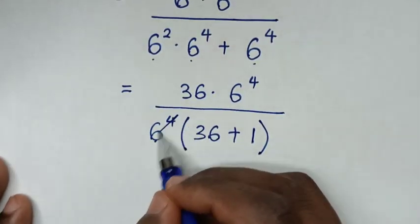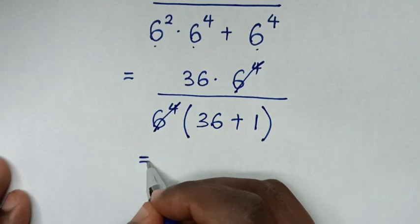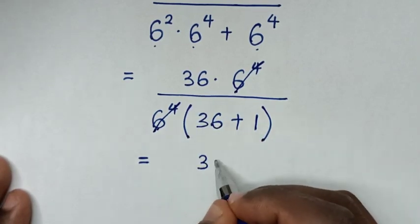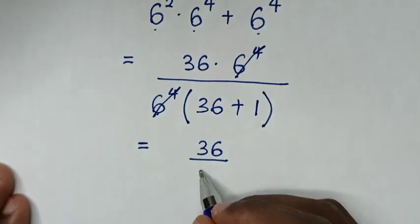Then in the next step, to simplify this, 6 power 4 will cancel with this 6 power 4, so it will be equal to this 36 over 36 plus 1 is 37.